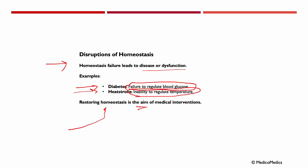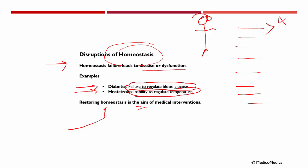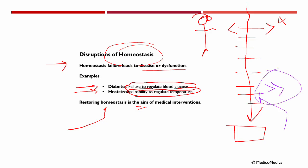Just as in anatomy you learned the anatomical position as a reference point so you don't get lost, it's the same here. We start with homeostasis — what is the normal? When you go to the doctor and take blood tests, you are given ranges, and if a value is above or below that range it is marked. These ranges indicate homeostasis, and when a value deviates from that, there is a disruption, probably due to some disease or dysfunction.